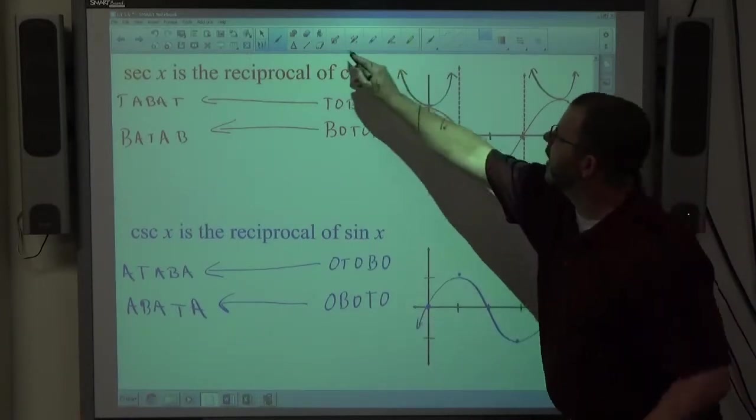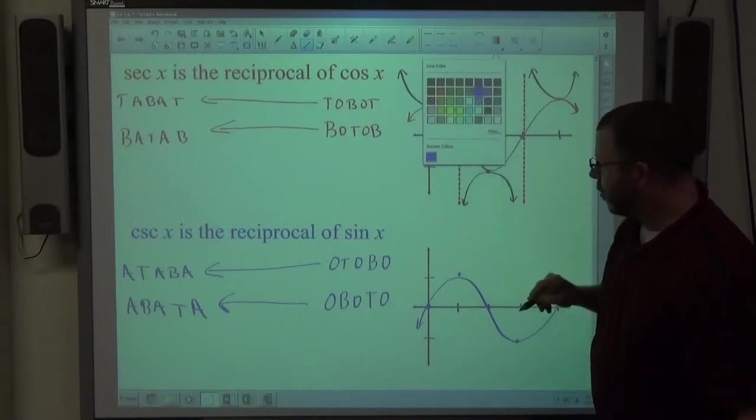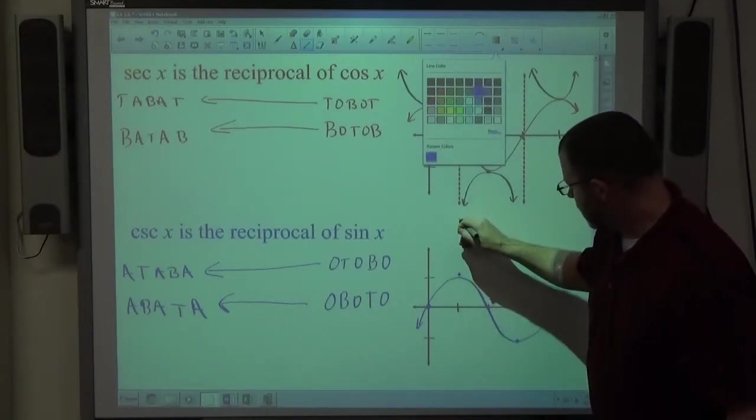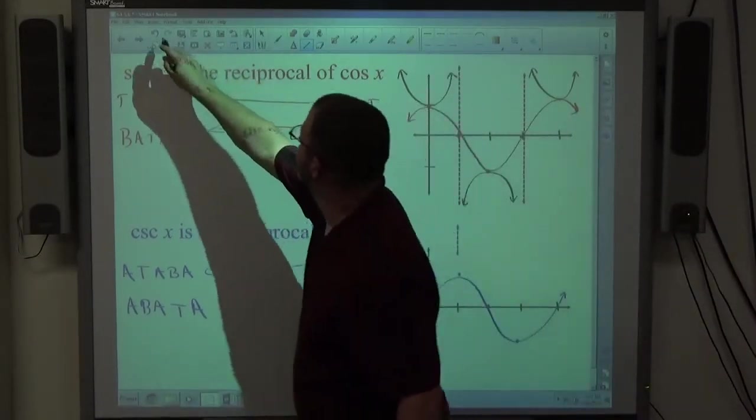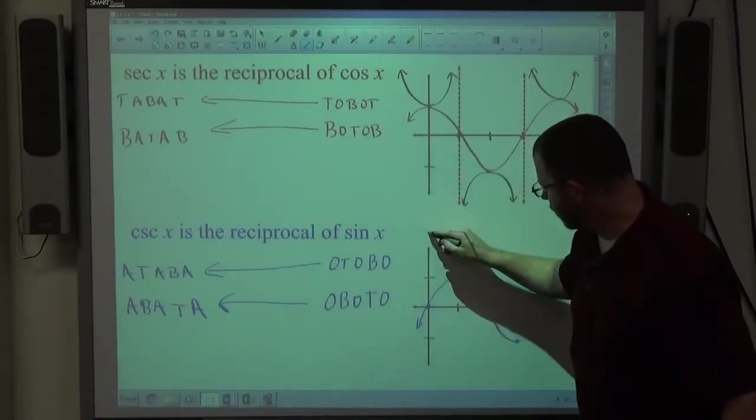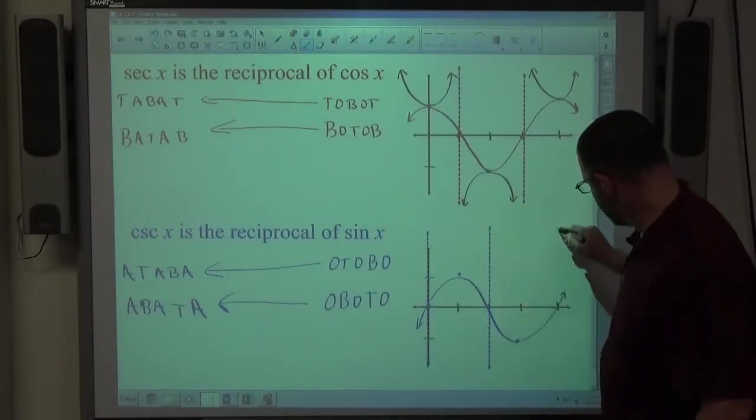And I wanted to graph a cosecant curve. The asymptotes happen at the zero. So asymptote here, asymptote here, asymptote here.